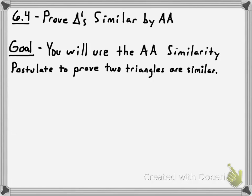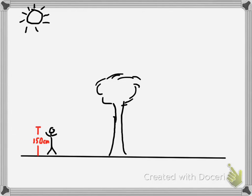Welcome — today we're going to be learning how you prove that triangles are similar using what's called the Angle-Angle, or AA, similarity postulate. It's a very simple concept, and I think you'll catch on quickly. I want to start off by explaining what the postulate is, but doing so in the context of a real problem that you could actually do.